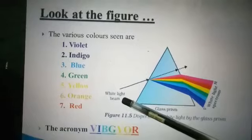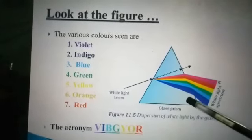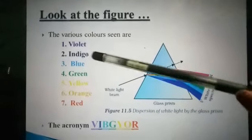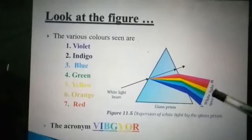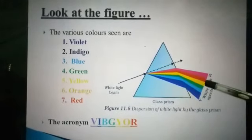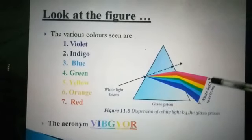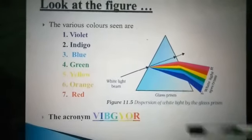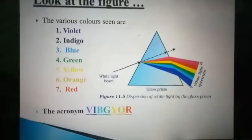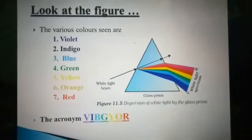Sunlight is considered as a white light beam, and here all these are different colors of the rainbow. It starts from V — V stands for violet — then indigo, blue, sky blue, green, yellow, orange, and then red. The acronym used here is VIBGYOR, represented by different colors to help you memorize.